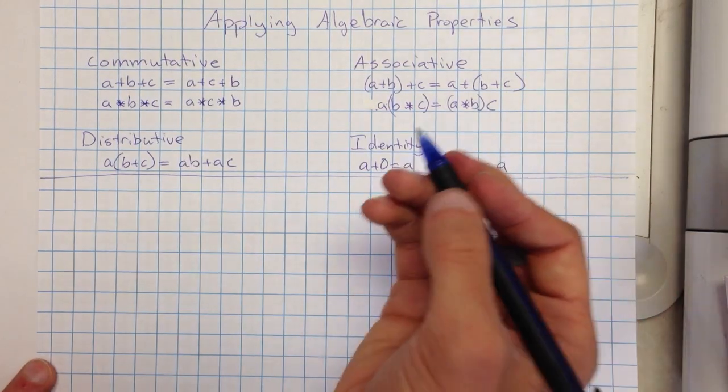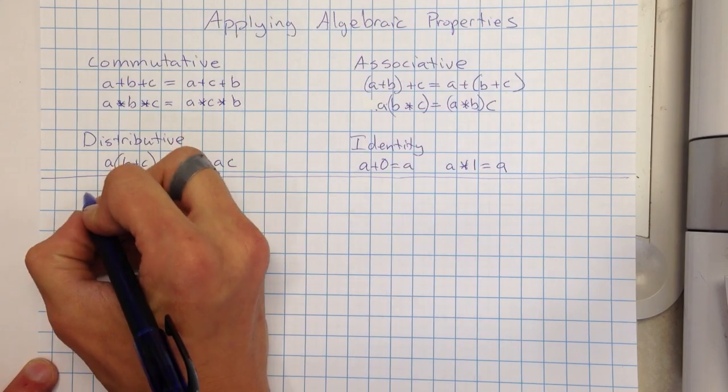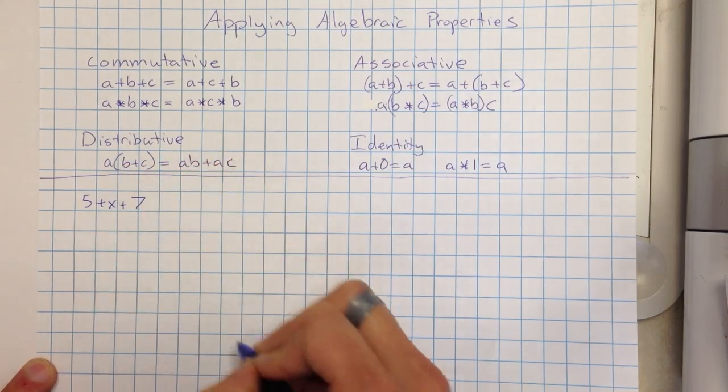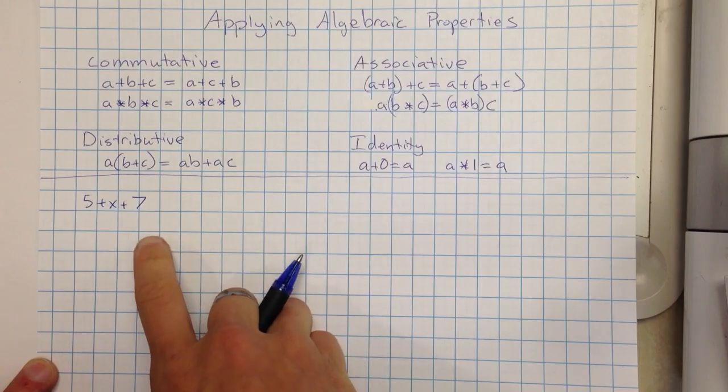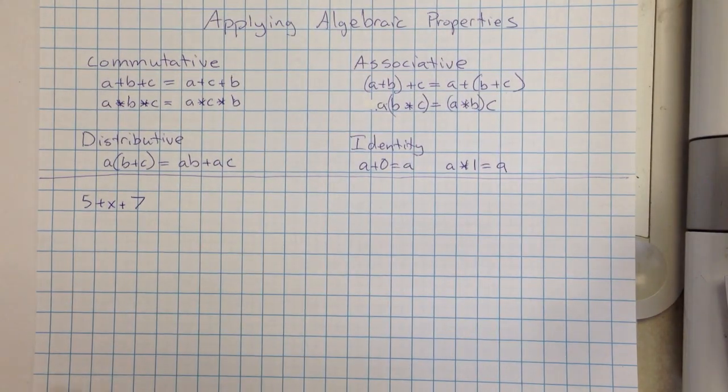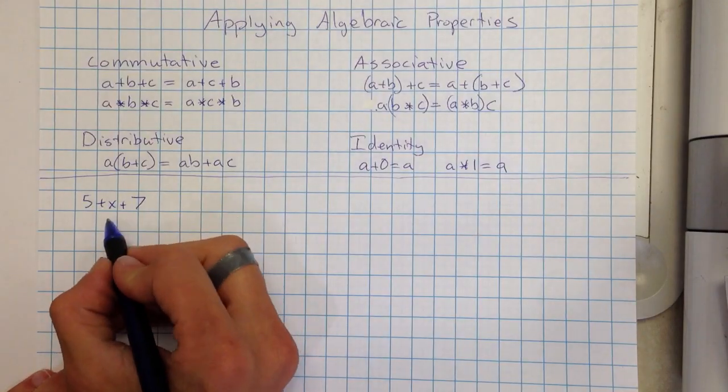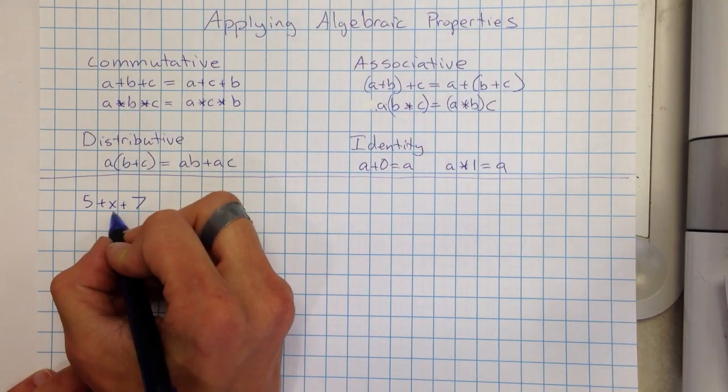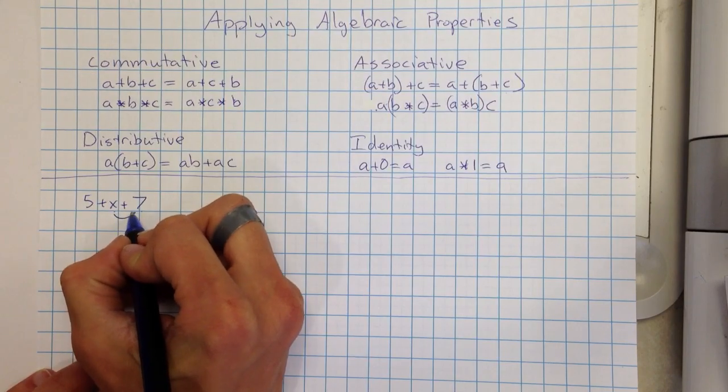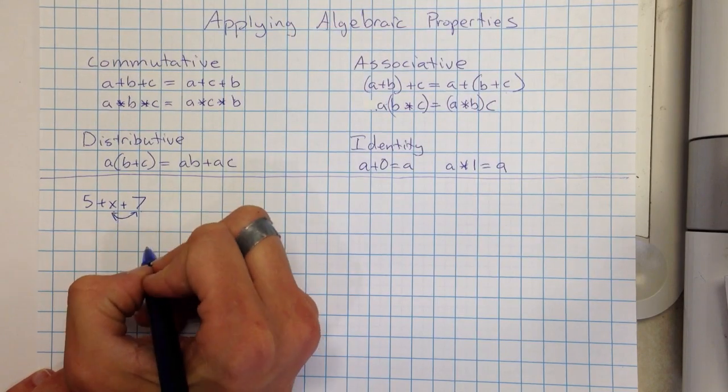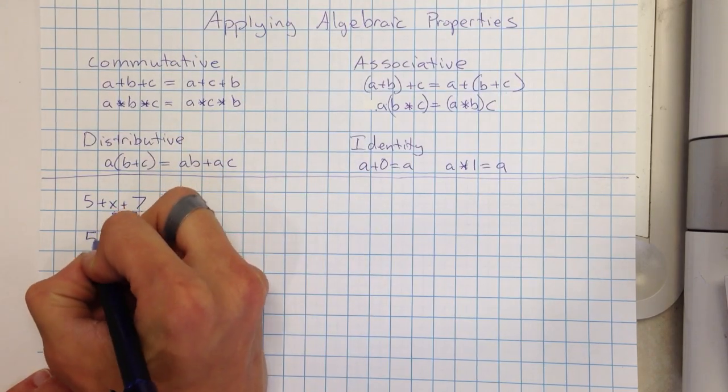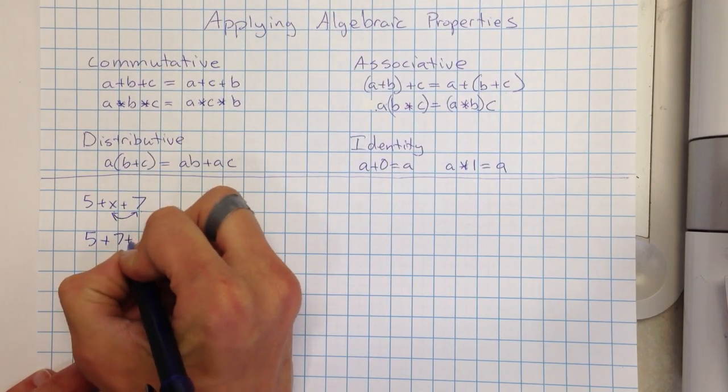So then we're going to look at a couple quick examples of how we can actually apply this. Let's say I had 5 plus X plus 7. And I wanted to simplify a little bit, make it a smaller problem or a nicer expression that looks a little bit neater. I can do that by noticing that I have an X and a 7 here. And I want to add left to right, but if I move the X over here and the 7 right here, if I move those numbers, commutative, then I could rewrite this as 5 plus 7 plus X.